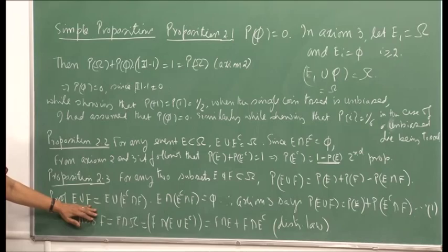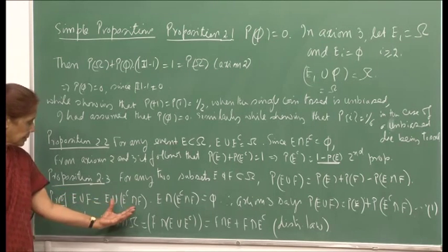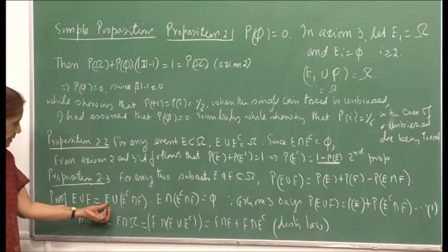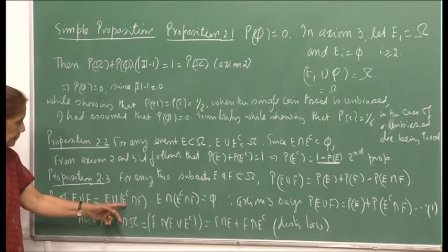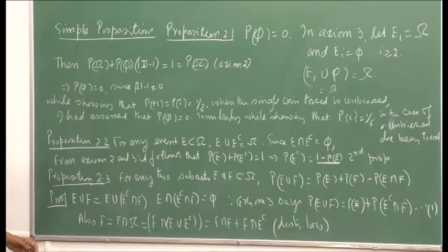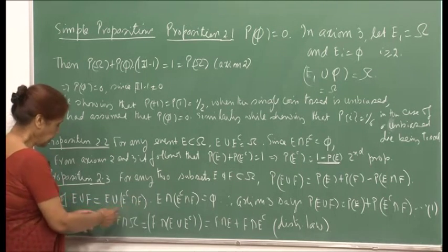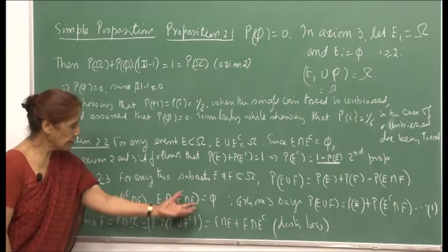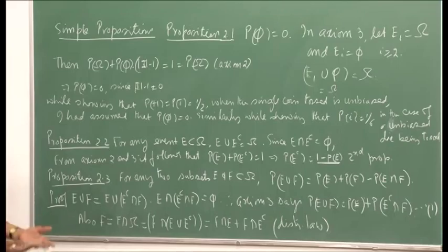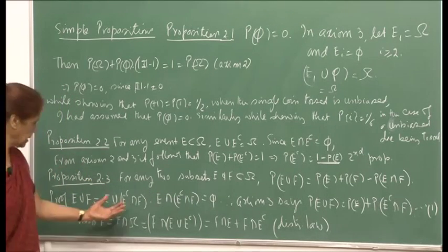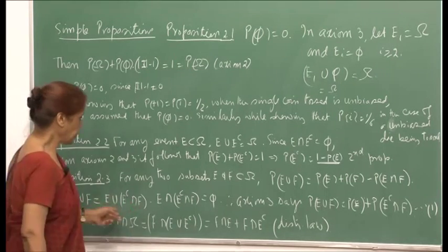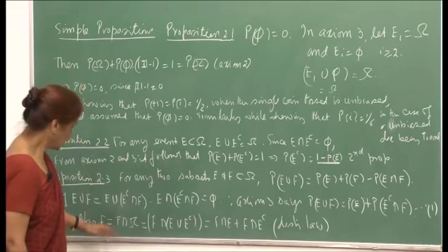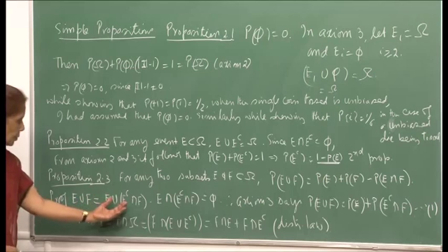I write E ∪ F = E ∪ (Eᶜ ∩ F), because the elements of F that are in E are covered by E, and the remaining elements of F not in E are in Eᶜ. By doing this, the union is broken into two disjoint sets, since no element can be in both E and Eᶜ. Applying axiom 3, P(E ∪ F) = P(E) + P(Eᶜ ∩ F).